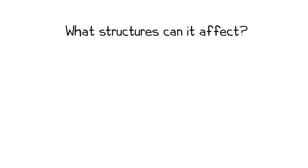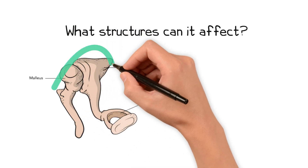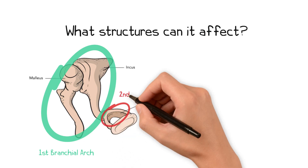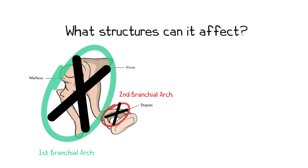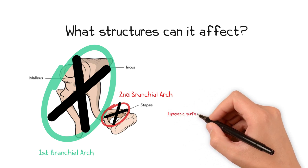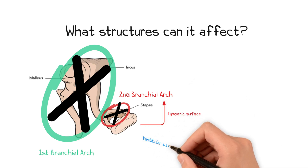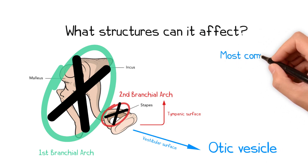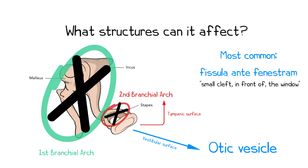By definition, the disease process only affects structures derived from the otic vesicle. As the malleus and incus are first branchial arch derivatives, and the stapes superstructure — aside from the footplate — is a second branchial arch derivative, these structures can never be the site of an otosclerotic focus. The footplate, however, has two different embryological origins: the tympanic surface is derived from the second branchial arch, whereas the vestibular surface is derived from the otic vesicle. Most commonly, an otosclerotic focus is found just in front of the oval window, known as the fissula ante fenestram.